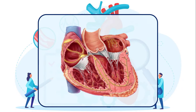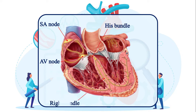Every normal heart has a specific electrical conduction system that consists of the SA node, AV node, internodal fibers that connect the SA node to the AV node, bundle of His, right and left bundle branches, and Purkinje fibers that are distributed throughout the subendocardial area.